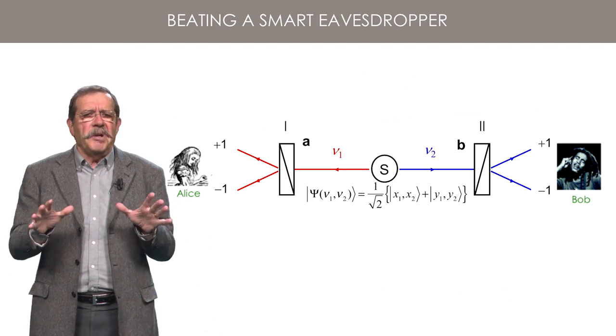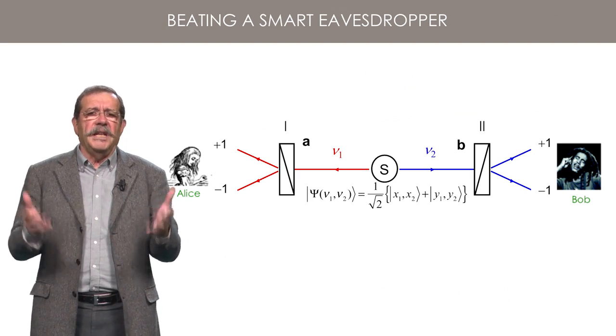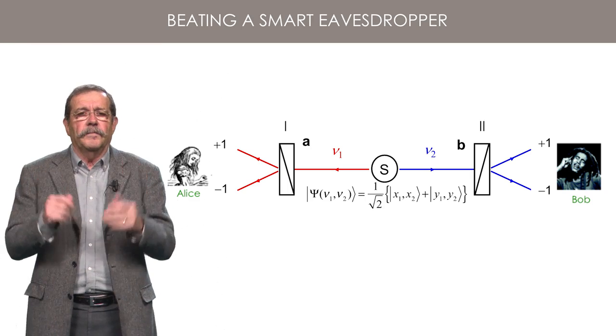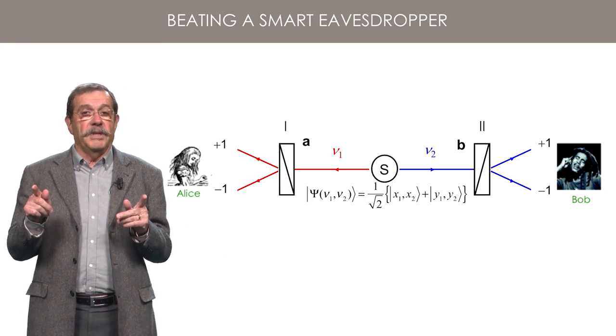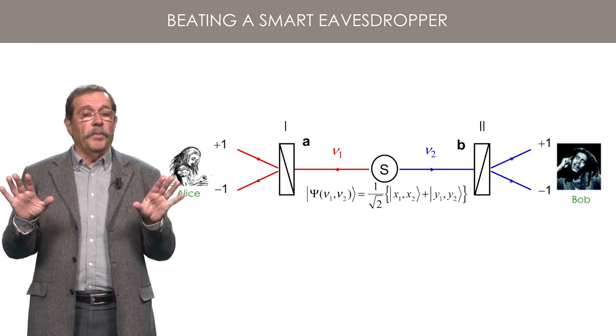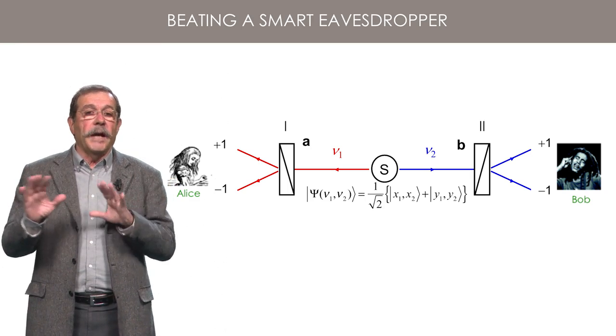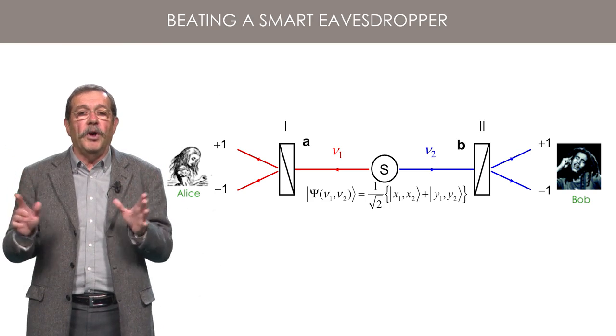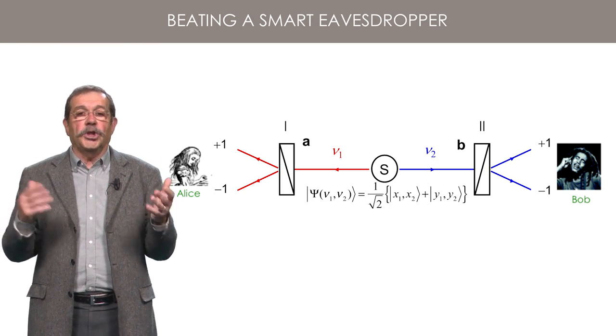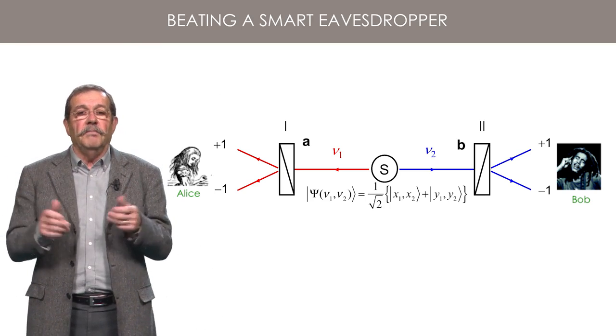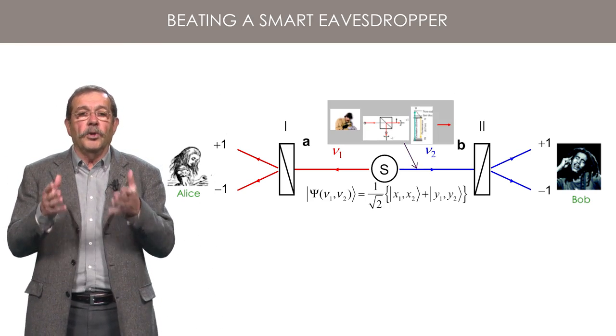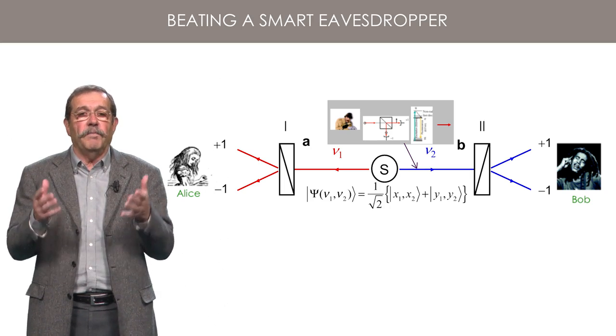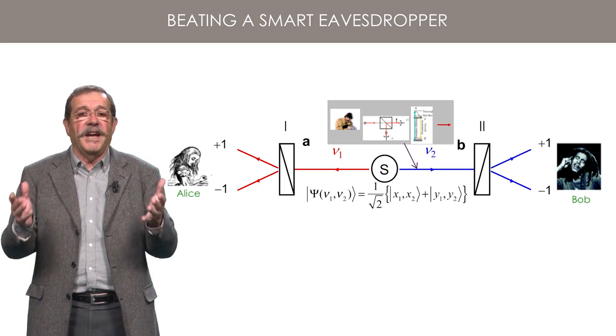Cryptographists must be paranoid and consider any possibility for a smart eavesdropper to get what they want to hide. Here might be a possibility. Let us suppose that the eavesdropper knows a priori what the direction B of the polarizer of Bob is. He or she can then insert, between the source and Bob, a polarizer oriented along the direction B and observe the results plus 1 or minus 1 he or she finds.